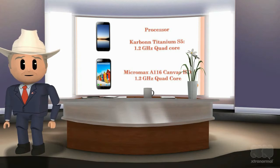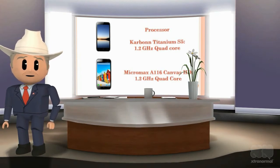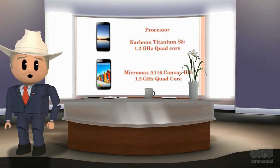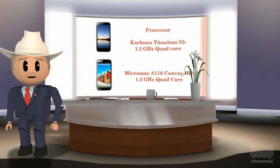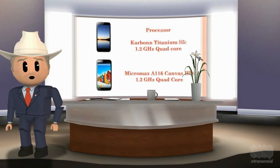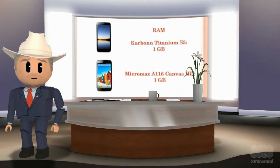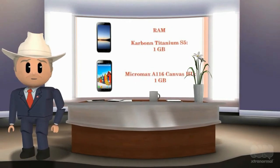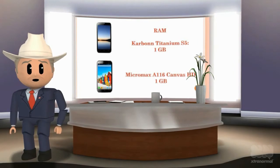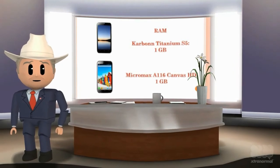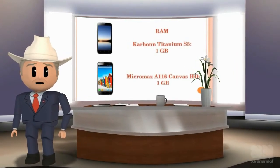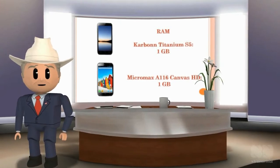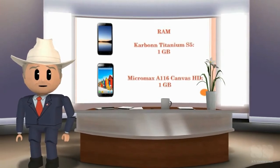Processor of Carbon Titanium S5 is 1.2 GHz quad-core and processor of Micromax A116 Canvas HD is 1.2 GHz quad-core. RAM of Carbon Titanium S5 is 1 GB and RAM of Micromax A116 Canvas HD is 1 GB.